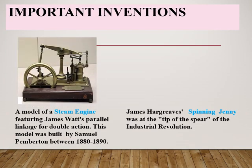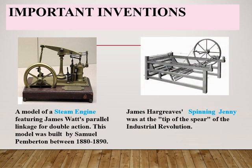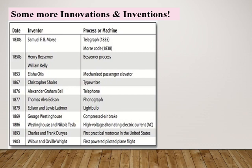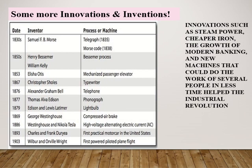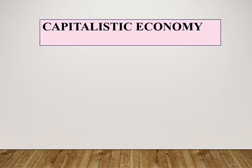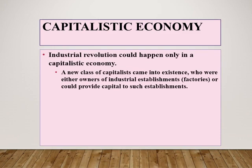Important inventions included the steam engine by James Watt, the spinning jenny by James Hargreaves, Samuel Morse's telegraph, Henry Bessemer's Bessemer process, Alexander Graham Bell's telephone, and Edison and Lewis Latimer's light bulb. Innovations such as steam power, cheaper iron, the growth of modern banking, and new machines that could do the work of several people in less time helped drive the Industrial Revolution.